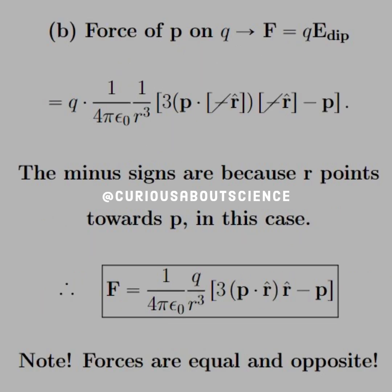Now, for the force of P onto Q, we note that we can simply use F equals qE, where E is the field of the dipole. We can plug the field of the dipole in, but we need to note that the R hat directions are pointing towards P, and therefore we have a negative sign attached to them. Thankfully for us, there's two negatives and they cancel out.